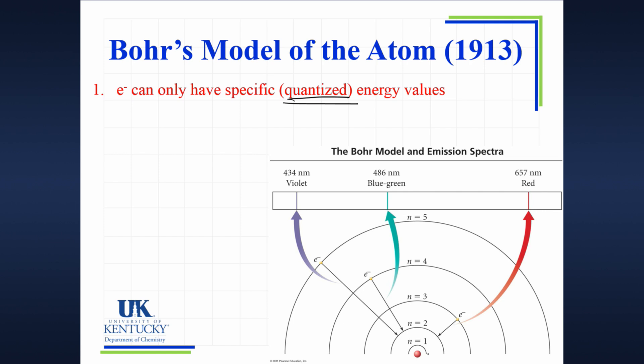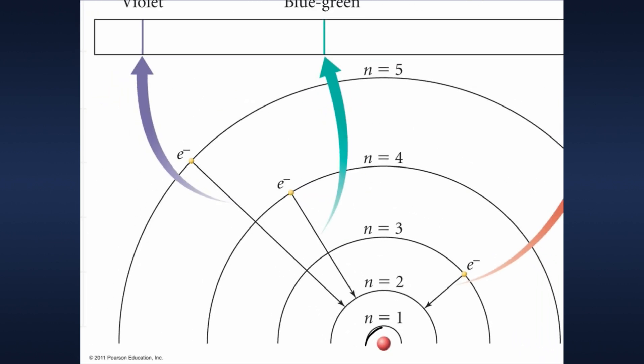An electron can be in this region here. Let me zoom in on that space right there. The electron could maybe be here at what we call n equals 1. The electron could be here.